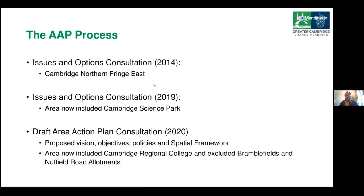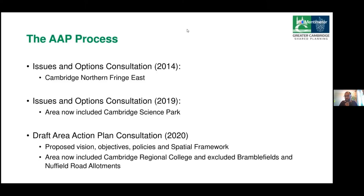Regarding water supply, those engaging with the Greater Cambridge Local Plan discussions will have heard us say time and again that water supply is a really important issue. For the local plan, it would be predicated on adequate water supply being resolved at later stages. Because the AAP is at a more advanced stage, we need a clear policy position now. The AAP policies propose that development can only take place if there's evidence of adequate water supply without causing unacceptable environmental harm. The AAP will not go forward to formal examination until Water Resources East has prepared a new water management plan.